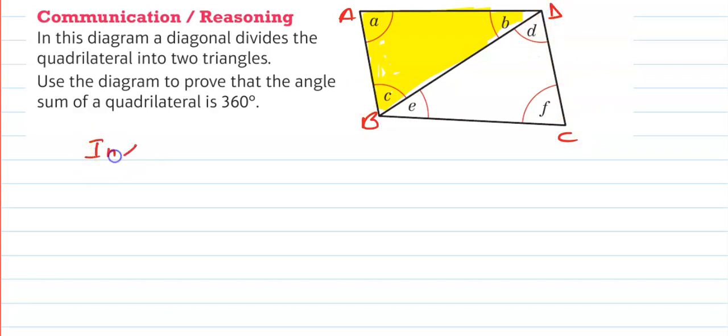So in triangle ABD, what you need to do? Because the sum of three angles of a triangle is 180 degrees, you can write down A plus B plus C equals 180 degrees. This is equation number one.